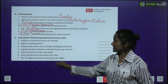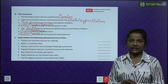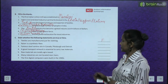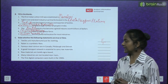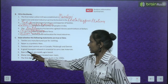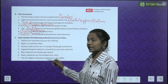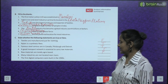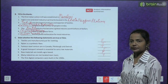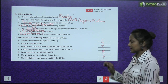True and False: Textiles are manufactured just for clothing — False, it is used in other things also. Nylon is a synthetic fibre — True. Famous steel centers are in Canada, Pittsburgh and Detroit — True. A good transport network is essential to carry raw materials — True. Raw materials are totally agro-based — False. Many industries are not located near rivers — True. The first digital computers were built in the 1940s — True.